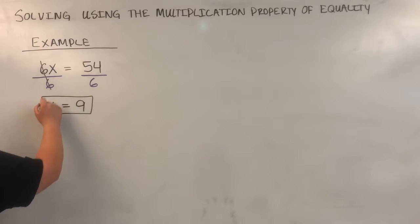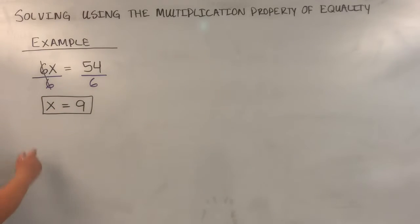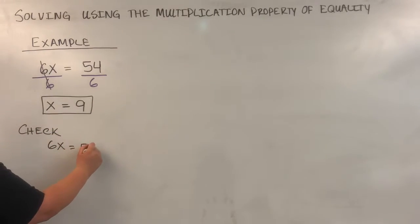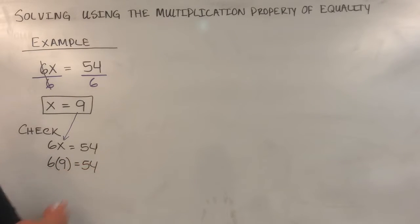This should be the solution to my equation. We are going to check. And I'm going to plug in this 9 value into that x. So I have 6 times 9 equals 54. 6 times 9 is, in fact, 54. So this is accurate, which means that x equals 9 is the solution to your equation.